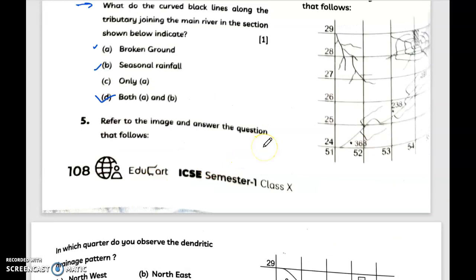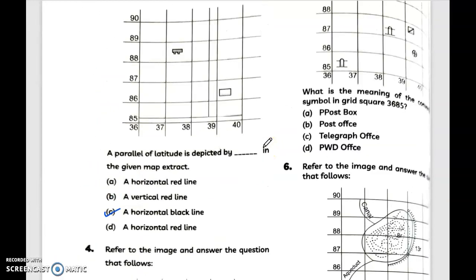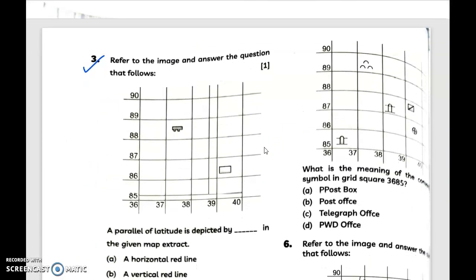Refer to the image and answer the following question. This is the image. What is the meaning of this symbol in grid square 3685? Answer is B, post office.